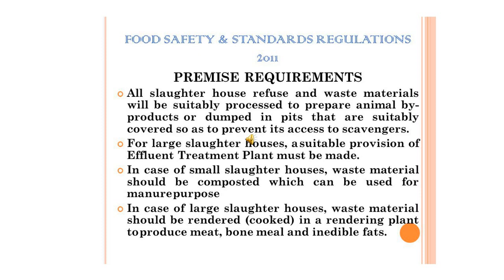Water supplies should be independent, adequate, and potable. Examination of animals should include both post-mortem and ante-mortem examinations. Animals or meat found unfit for human consumption should be destroyed or condemned. Storage of meat should be in fireproof and rat-proof rooms. For overnight storage, the temperature of the room shall be maintained below 5 degrees centigrade.